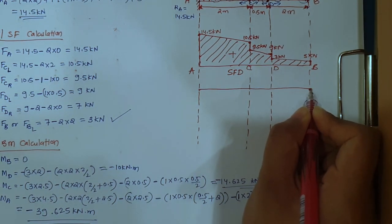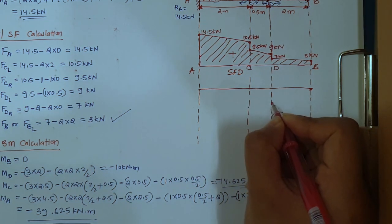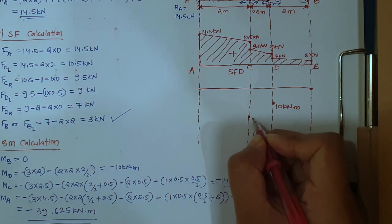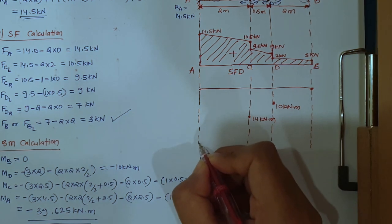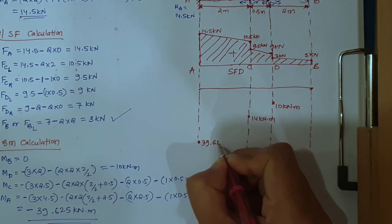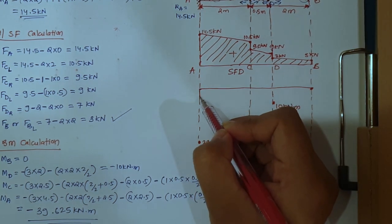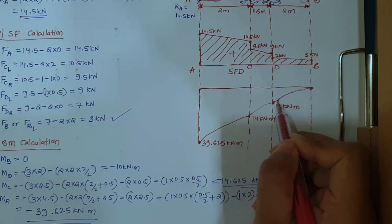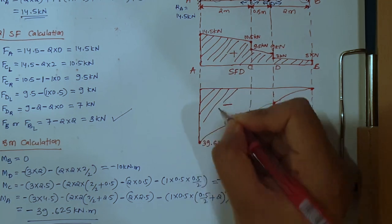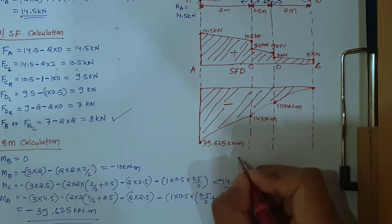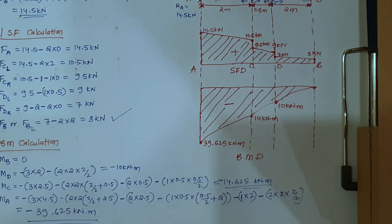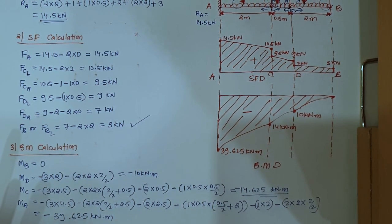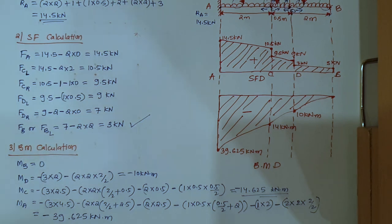Drawing the bending moment diagram: at B = 0, at D = −10 kN·m, at C = −14.625 kN·m, at A = −39.625 kN·m. This is the negative bending moment diagram for the cantilever beam. I hope this numerical is clear. Tomorrow we will be solving more numericals for cantilever beams. See you in the next session.